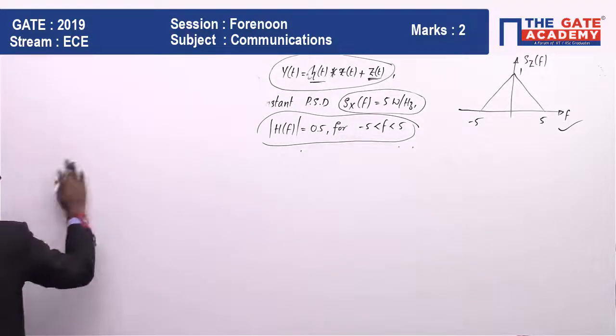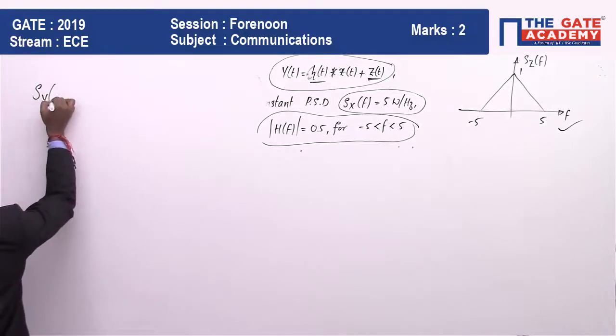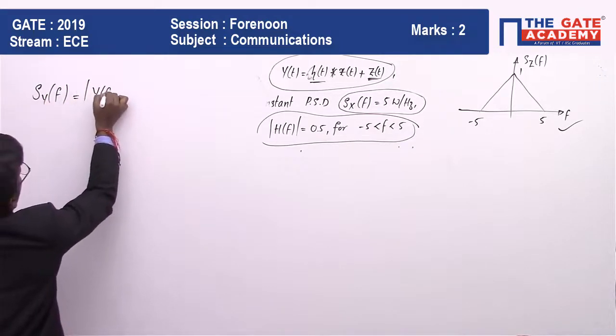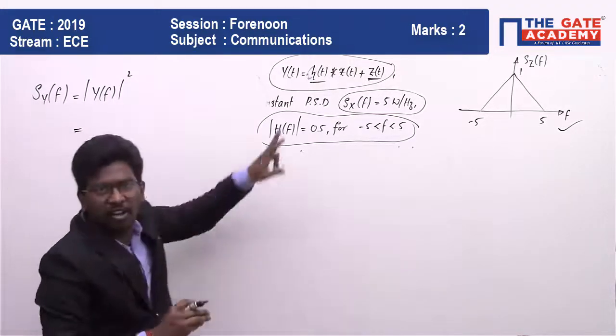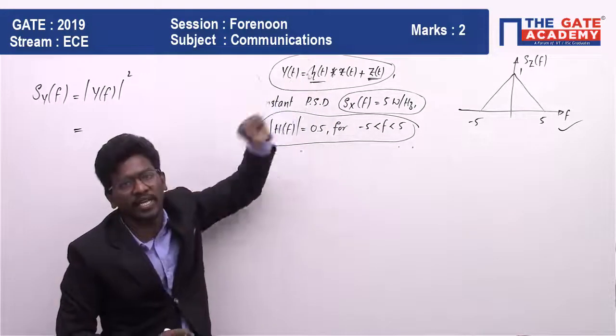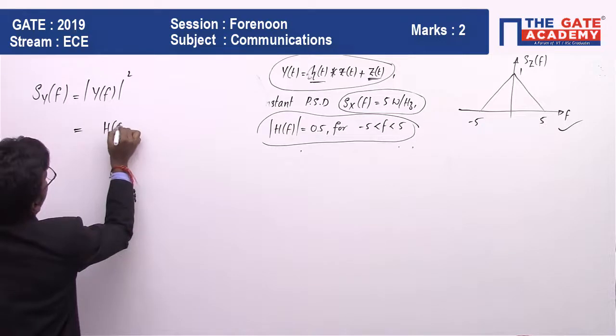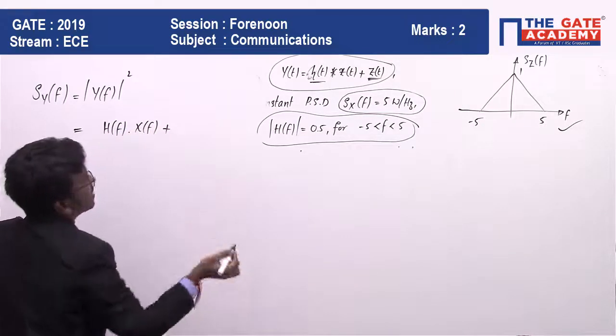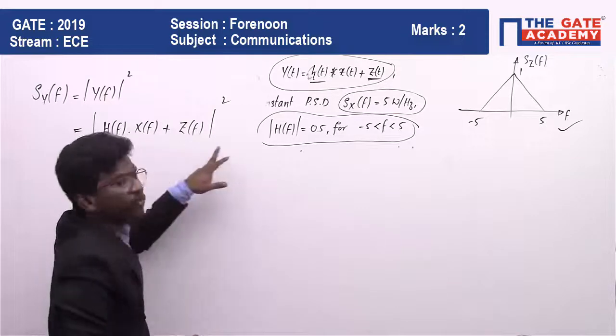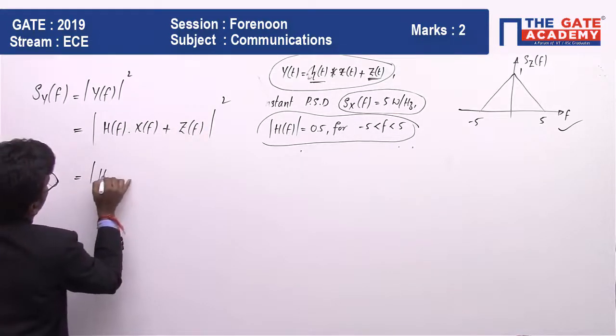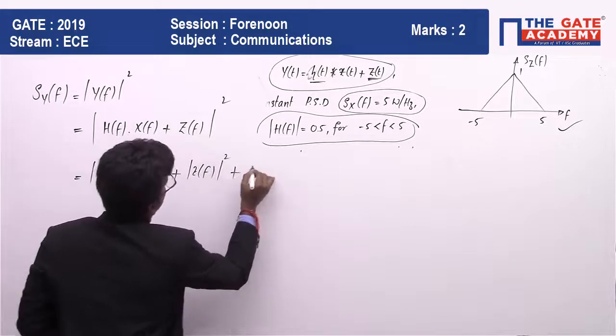The power spectral density of y is Sy(f) which is |Y(f)|^2. How to get Y(f)? Apply Fourier transform. Convolution in time domain becomes multiplication in frequency domain: H(f) times X(f) plus Z(f). Now you need to square this, which is in the form a plus b whole square, equal to a^2 plus b^2 plus 2ab.